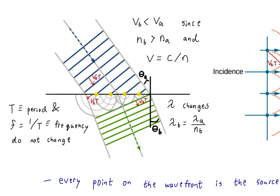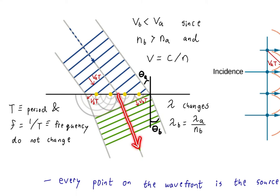How does the shorter wavelength cause the light to bend? Consider the little sources that the wave front is composed of — an infinite number of them. These sources create what are called wavelets, treating each one as a point source, just like in double-slit interference. When we look at where all those wavelets constructively interfere, they create the new composite wave front — the wave front perpendicular to the new ray. Because of the shortened wavelength, the wave fronts lag, pulling the ray closer to the normal direction.